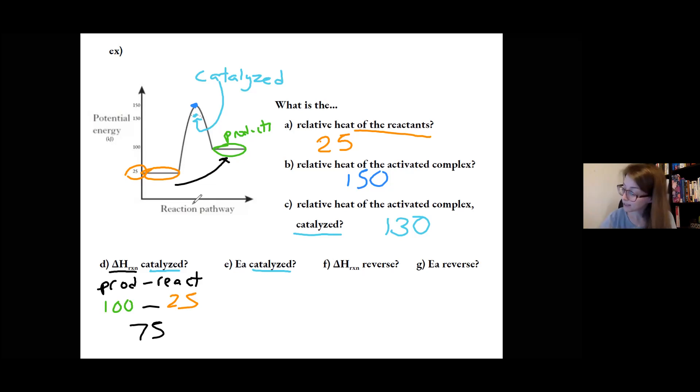Where it will affect something is the activation energy, because activation energy, we do top minus the start. Those are my informal words for it. But in a catalyzed reaction, my top is at 130, not at 150. So I need to use the 130, and then I can subtract out the 25. So it does actually lower the activation energy in a catalyzed reaction.